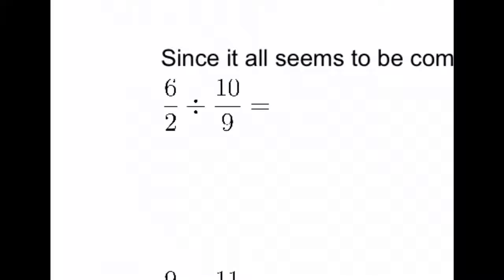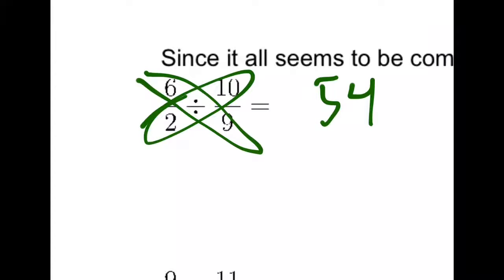Skipping down to the next section. 6 halves divided by 10 ninths. So we will multiply 6 times 9 which is 54 and 2 times 10 which is 20.